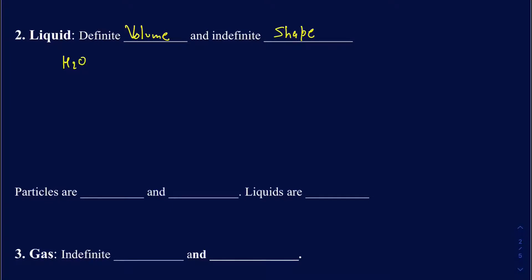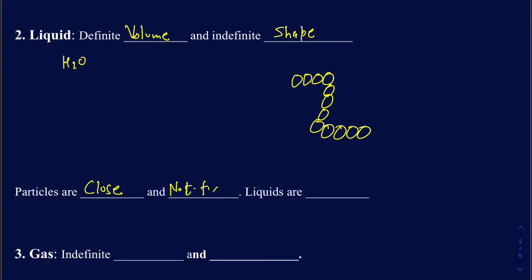What really makes liquids have an indefinite shape but a definite volume is how the particles are arranged. The particles are still fairly close to one another, but they are a little bit free to move around — they are not fixed. When they can move around, they can take the shape of anything you put them into. So particles are still close in liquids, but they are not fixed, which gives liquids a different shape.